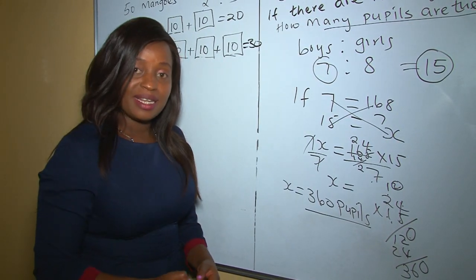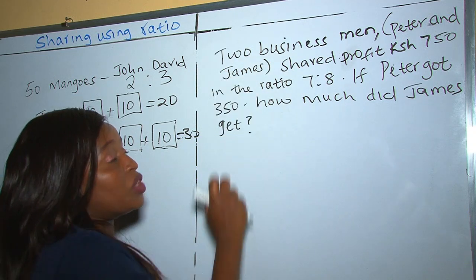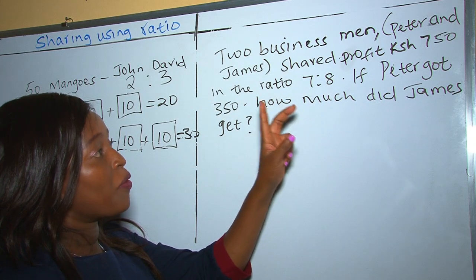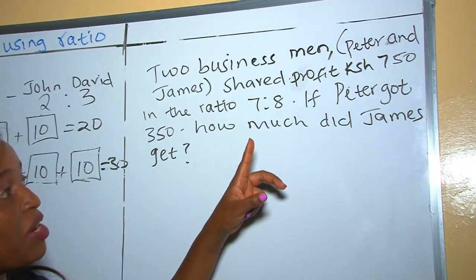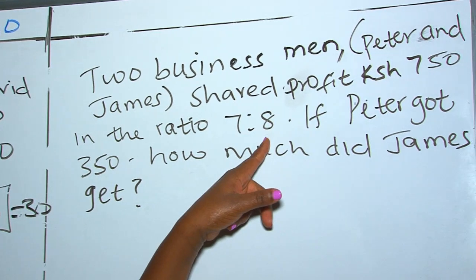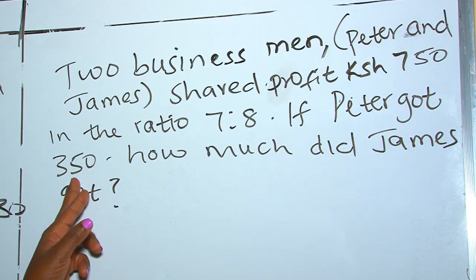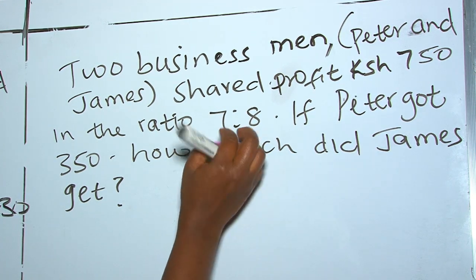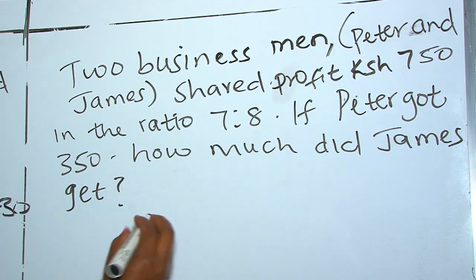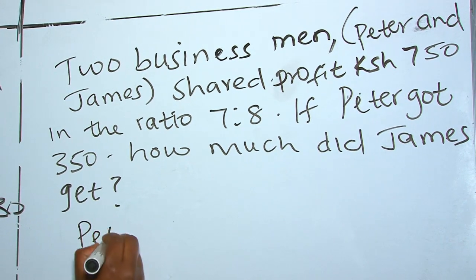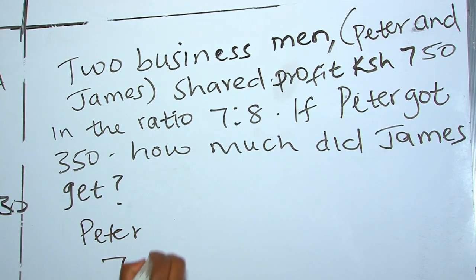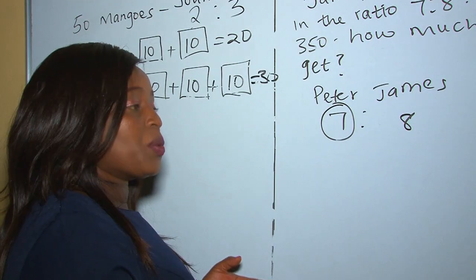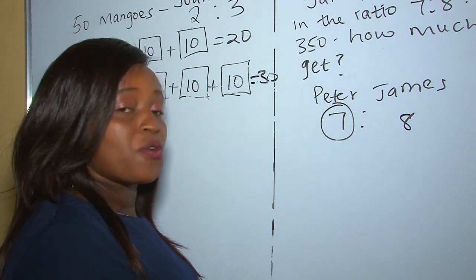In the next example, two businessmen — Peter and James — share a profit of Kenya Shillings 750 in the ratio 7 is to 8. If Peter got 350, how much did James get? Peter corresponds to 7 and James corresponds to 8 in the ratio.